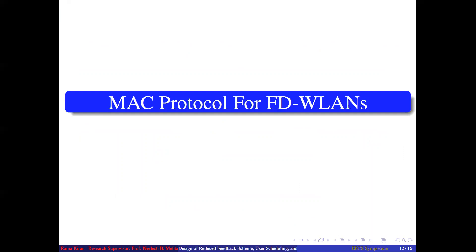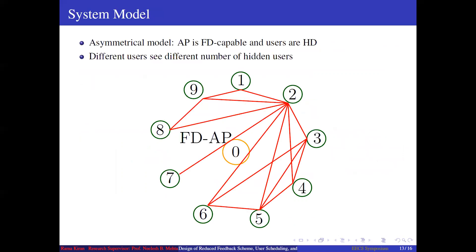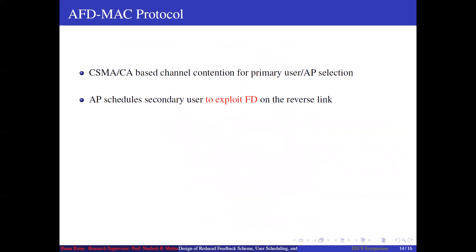If we consider full duplex WLAN, here we propose a medium access control protocol called the asymmetric full duplex MAC protocol. We consider the following system model: the AP is full duplex capable and users are half duplex. The AP is connected to all users, but users need not be connected to all other users — some users are hidden from particular users. For example, user 7 is connected to only user 2, but all other users are hidden from it. The proposed asymmetric full duplex MAC protocol selects a primary user based on a CSMA/CA-based channel contention mechanism, and then the AP schedules a secondary user to exploit full duplex on the reverse link.